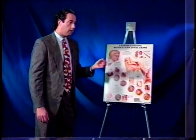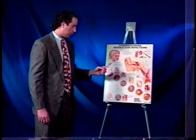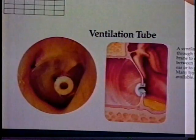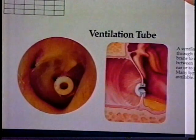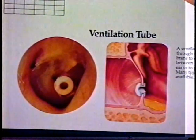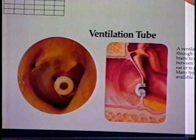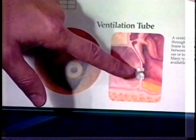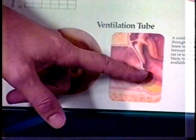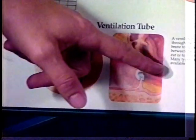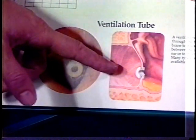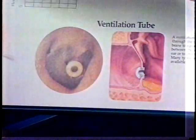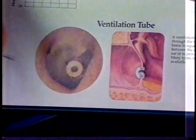The idea of ventilation tubes or pressure equalizing tubes — the tube actually goes right into the eardrum, and there is a flange on either side. One flange sits in the middle ear space, one flange sits in the external ear, and there's a small hole inside. That hole allows you to ventilate the middle ear space, essentially bypassing the eustachian tube that is not working well in your child or yourself.